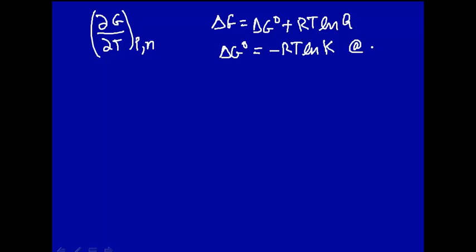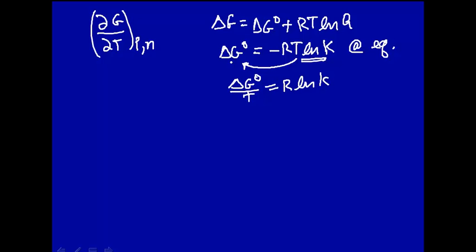At equilibrium, ΔG0 = -RT ln K. This is at equilibrium — it's the temperature dependence of ln K. Let's put the temperature over here, so we're looking at ΔG0/T, which will be equal to R ln K. This argument shows that we should really be looking at the temperature dependence of G over temperature.